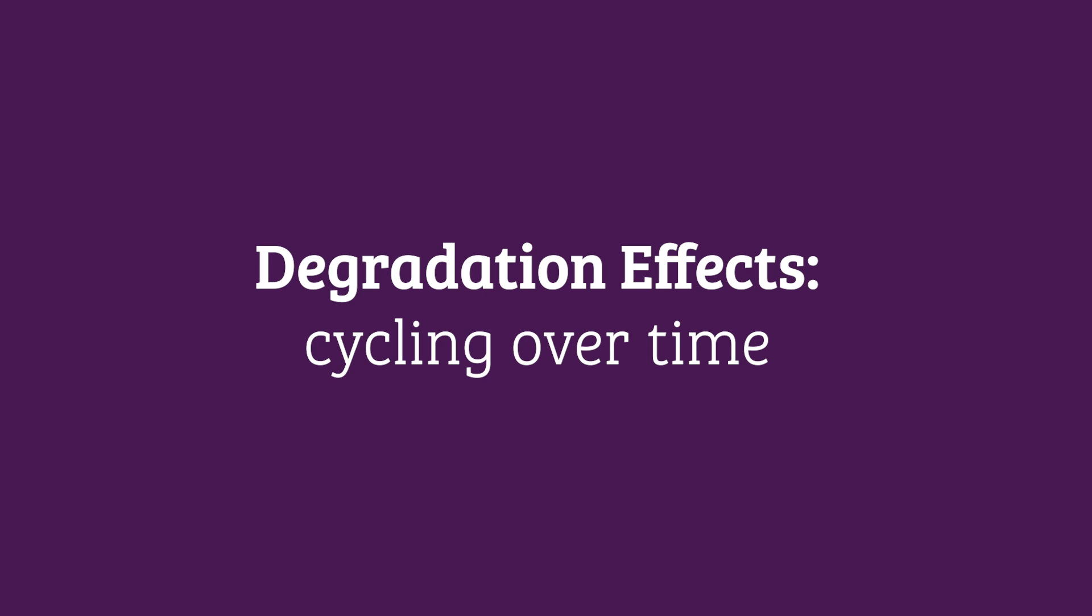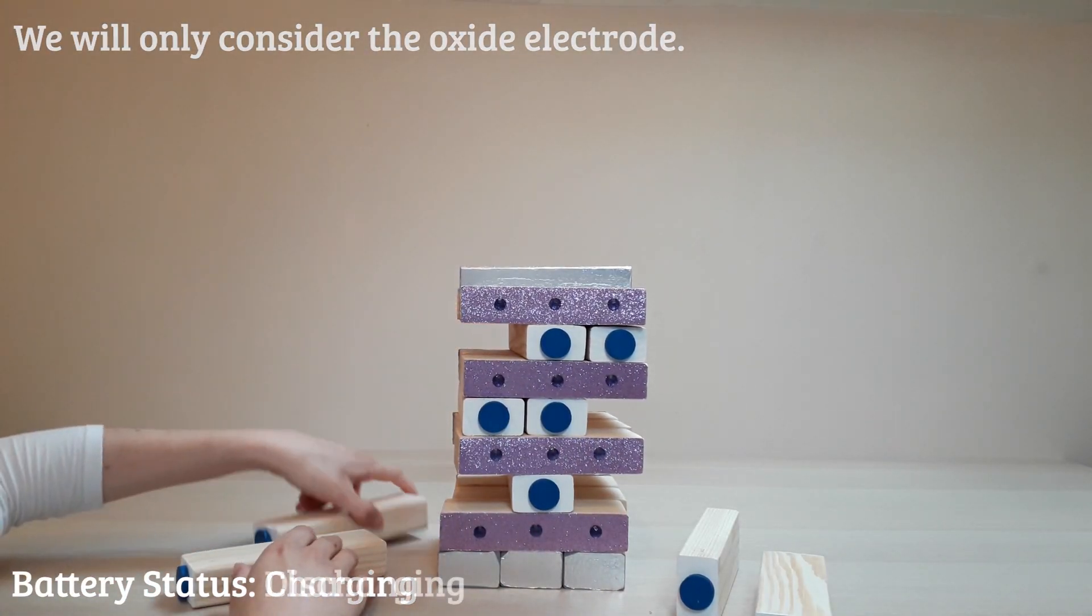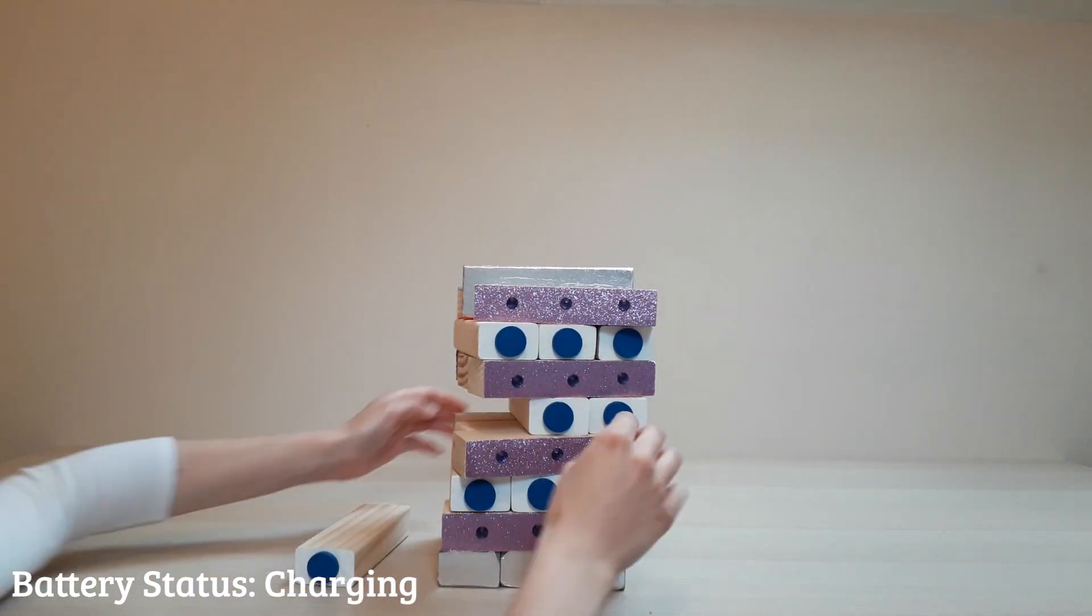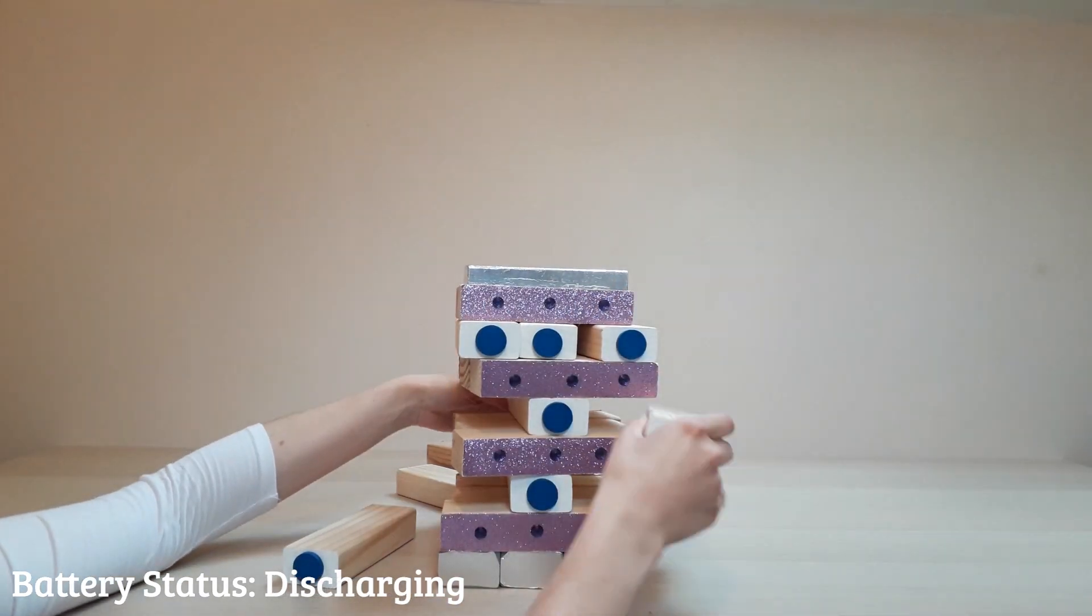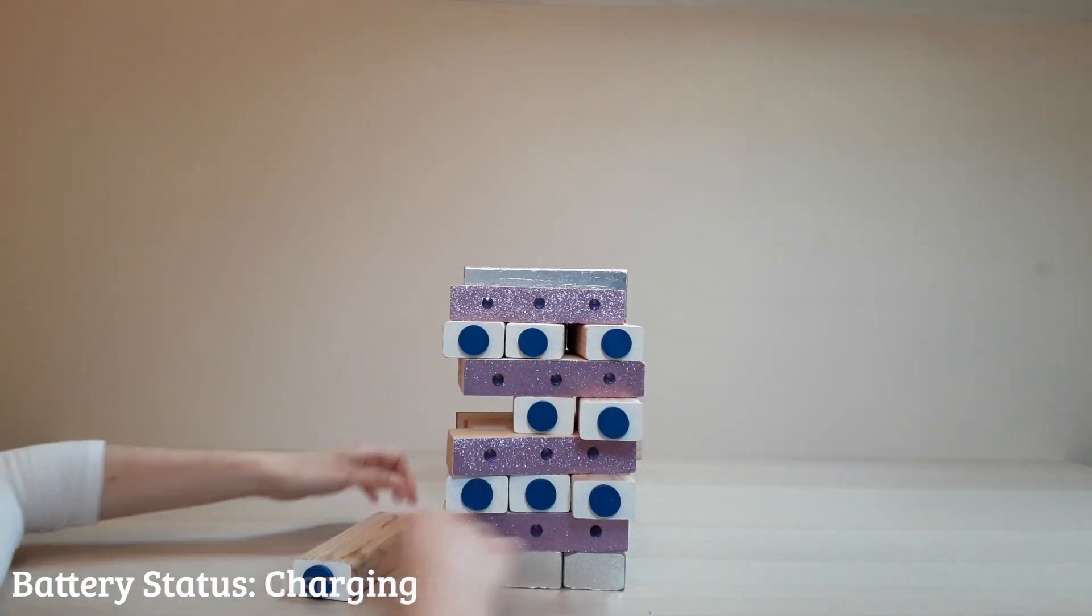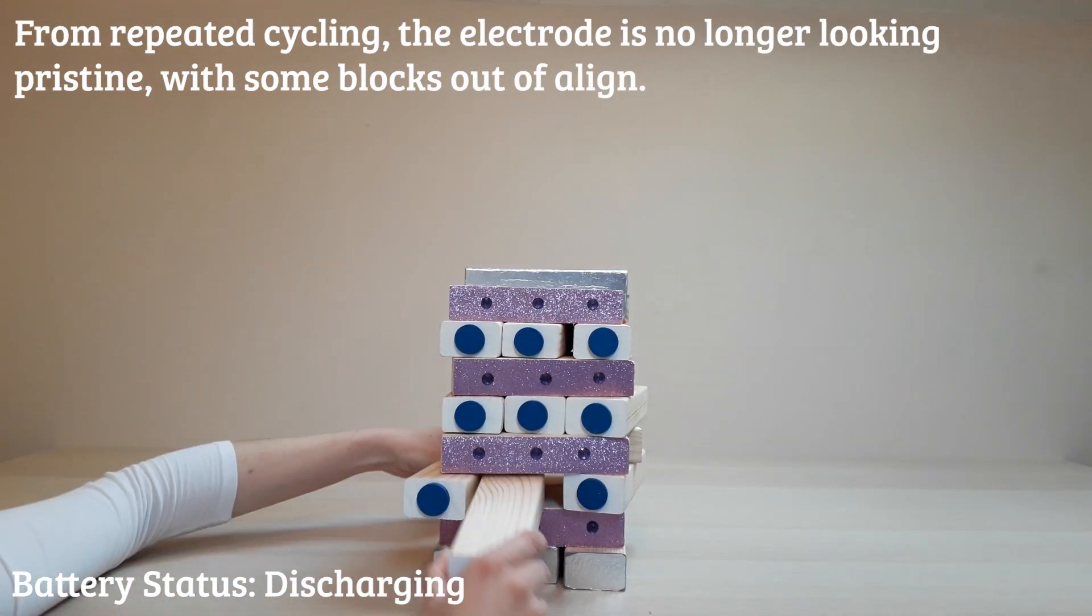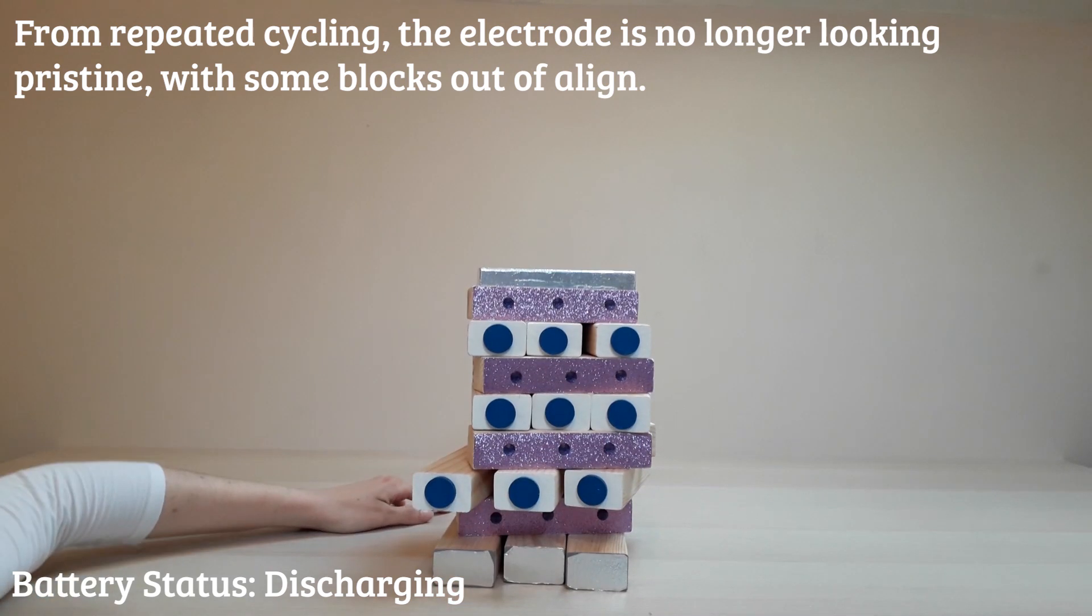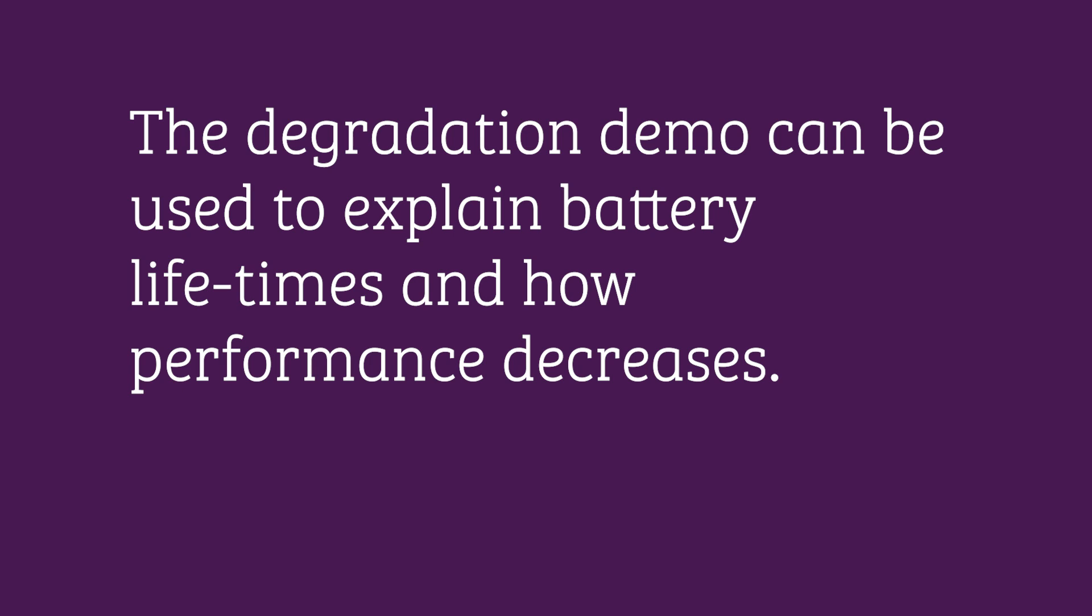Finally, let's consider degradation effects and what happens to our batteries over time. We will only focus on the oxide electrode but it can be done with the graphite electrode too. You can see the oxide electrode is undergoing repeated cycling of charging and discharging steps. Notice how this electrode's blocks are no longer aligned and have been displaced. This demo explains how performance decreases with time.